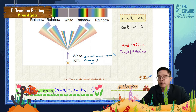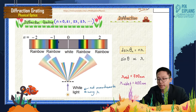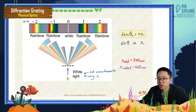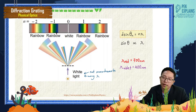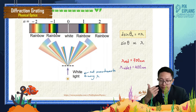So what kind of wavelengths does white light have? It has the wavelength of red, orange, yellow, green, blue, indigo, and violet — so it has seven wavelengths.